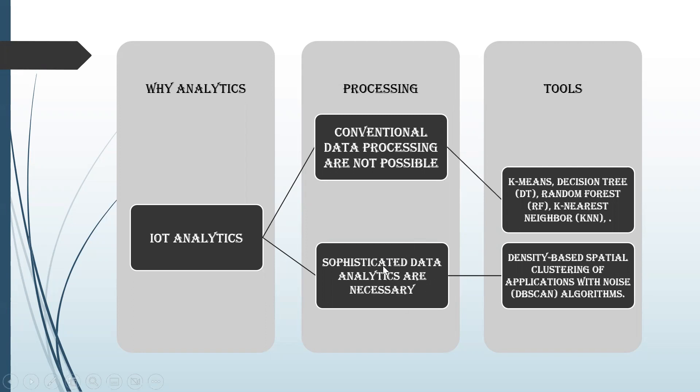We move into sophisticated data analytics. This sophisticated data analytics uses different tools like k-means, decision tree, random forest, k-nearest neighbor (KNN), and density-based spatial clustering of application with noise (DBSCAN) algorithms. These are all algorithms used by sophisticated data analytics to perform processing of data and bring out accurate analytics.